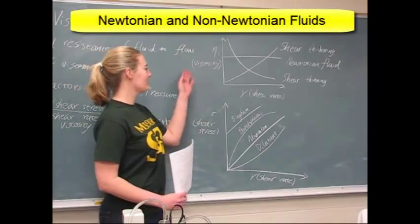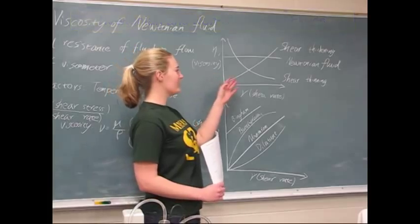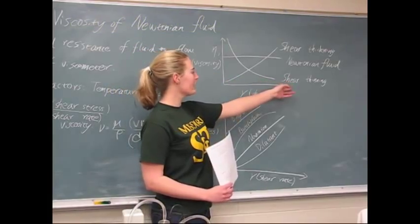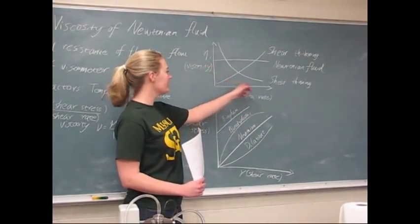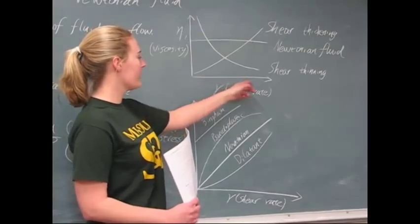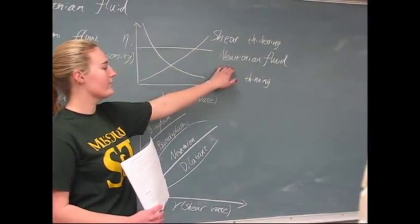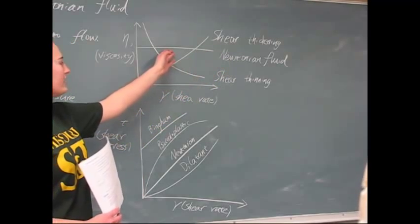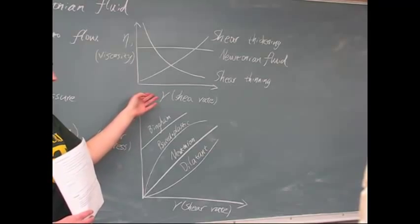As we see in this plot, which is shear rate versus viscosity, we see there are three different types of lines. We have shear thinning, which as the shear rate increases, your viscosity decreases. We have shear thickening, which as your shear rate increases, your viscosity increases. And we have a Newtonian fluid, which is the most important one, where viscosity is not affected by shear rate.